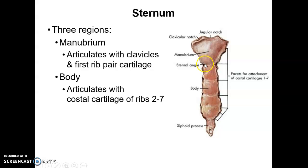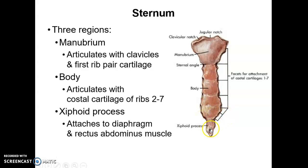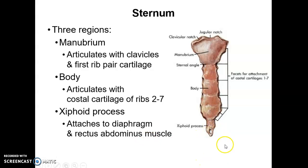Inferior to the manubrium is the fairly long body, which articulates with the cartilages of ribs 2 through 7. At the far inferior end there's the xiphoid process. It attaches to the diaphragm and the rectus abdominis muscle that you use when, say, you do sit-ups.